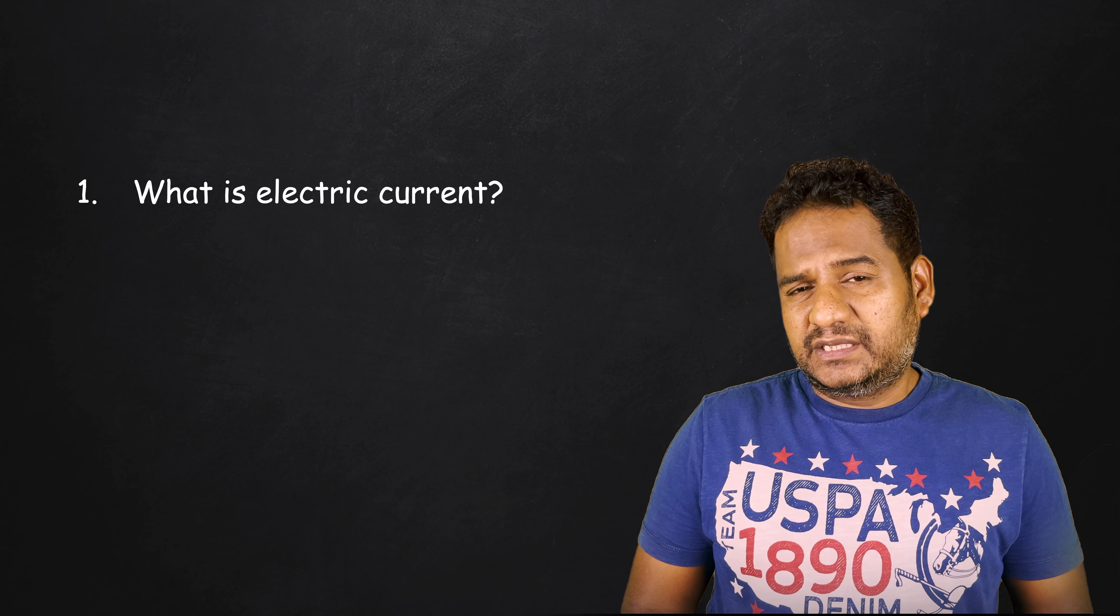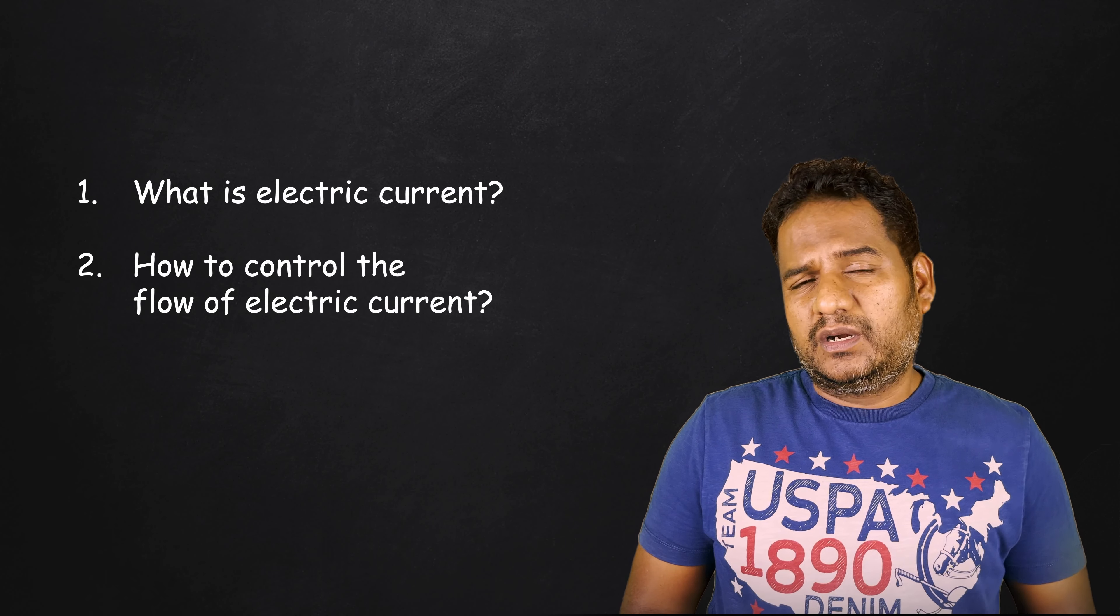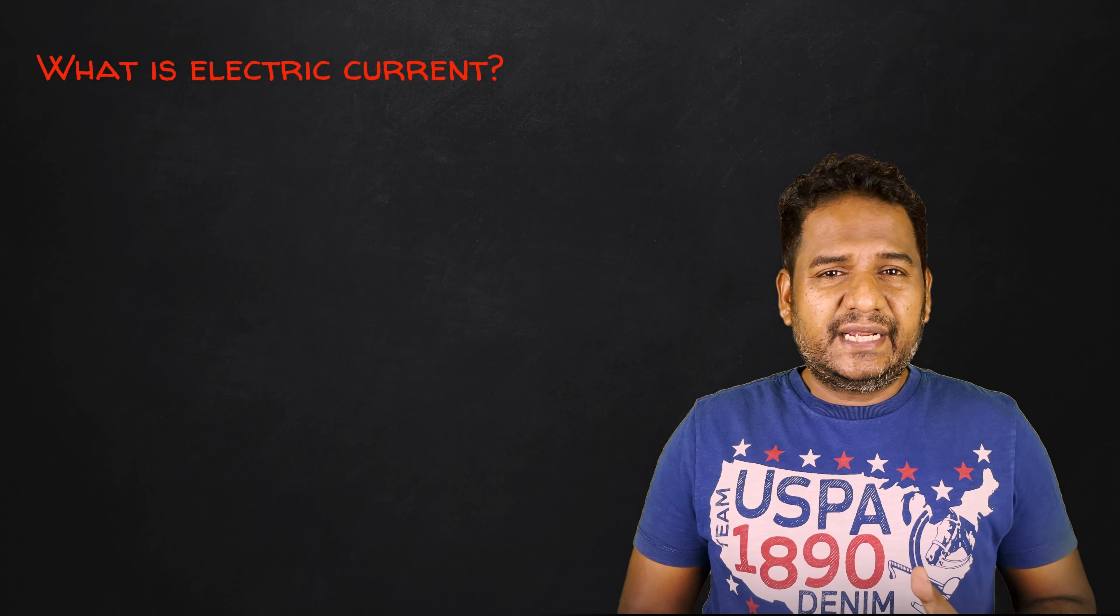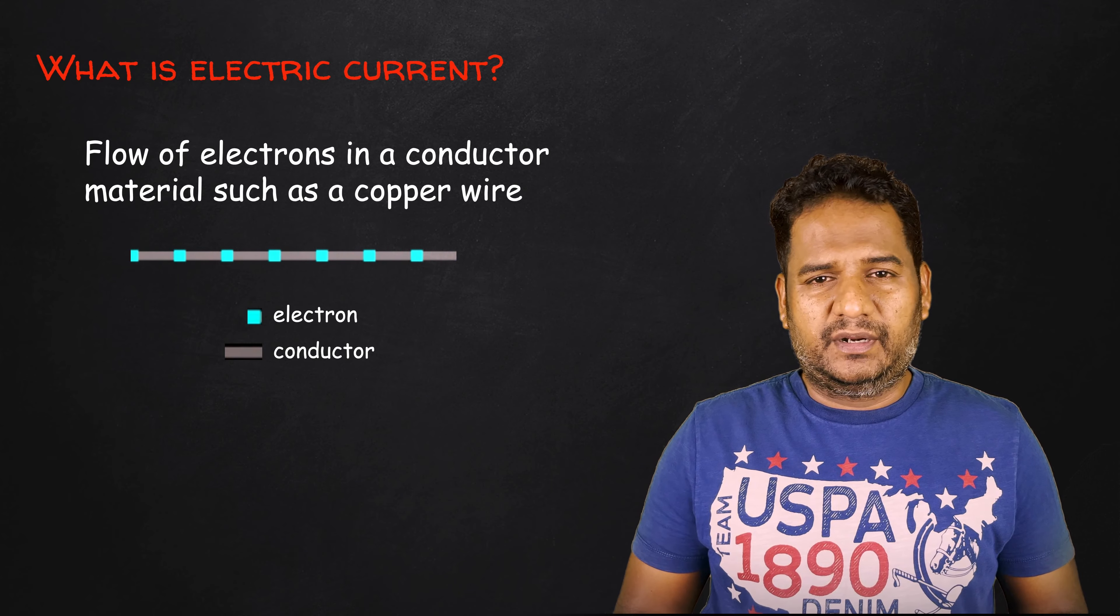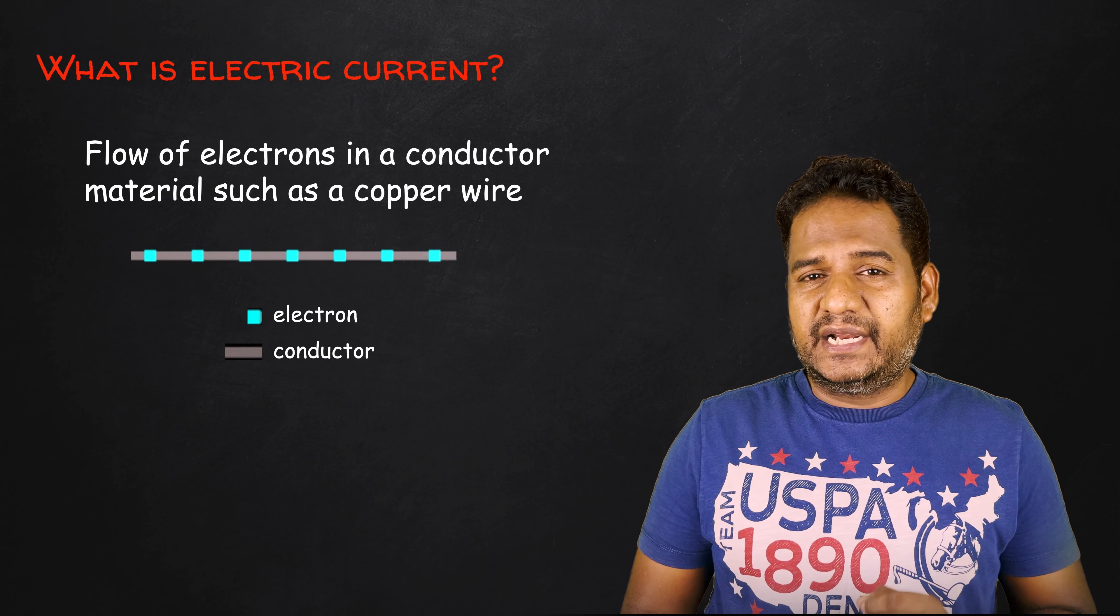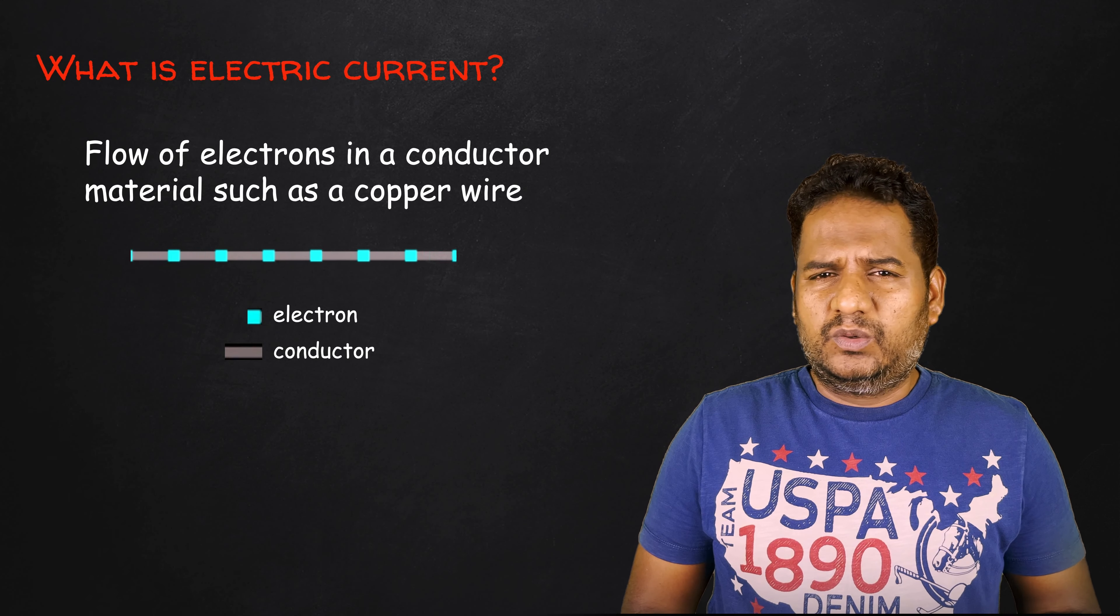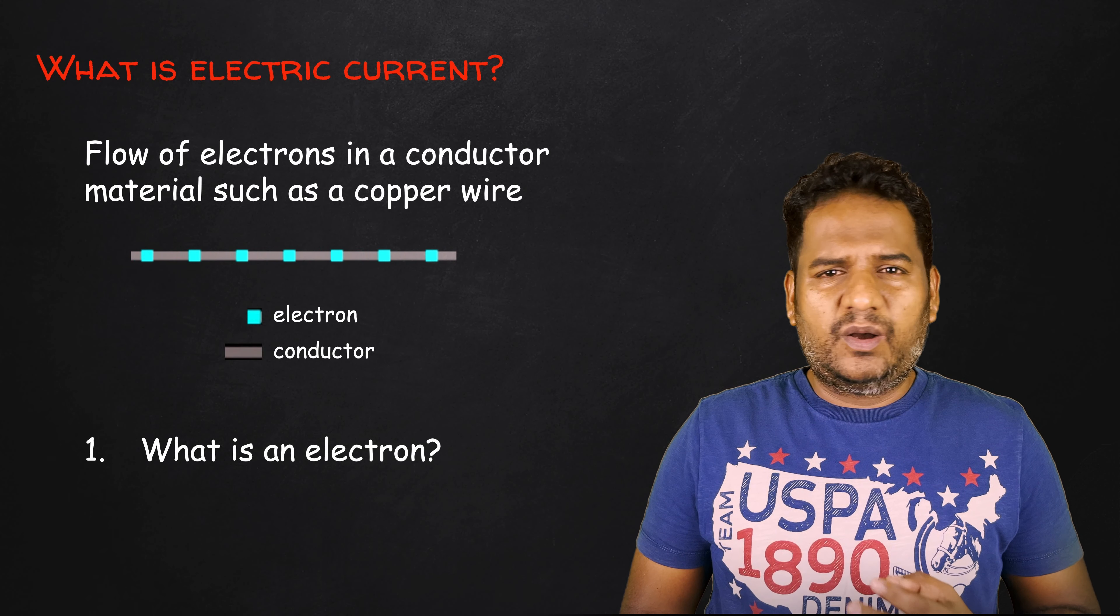So what is electric current? Once we know the answer to this question, we can look at how to control the flow of electric current. Electric current is nothing but a flow of electrons in a conductor material such as copper. The name electricity is actually derived from the word electron. So what is an electron and how does it flow?